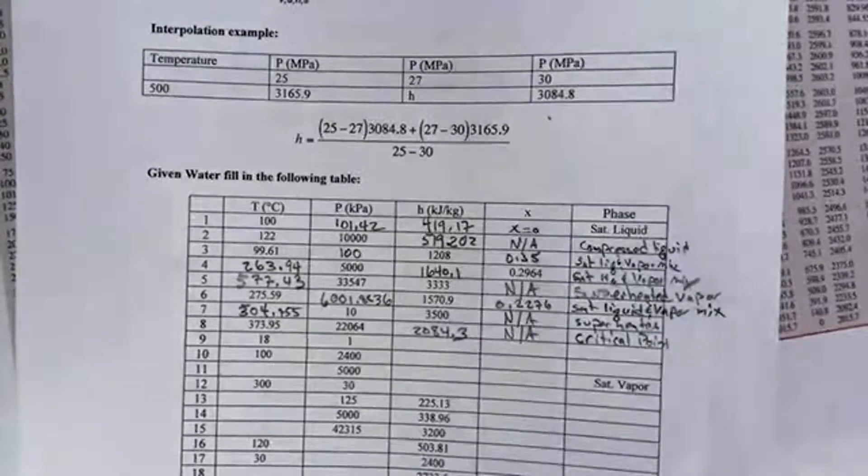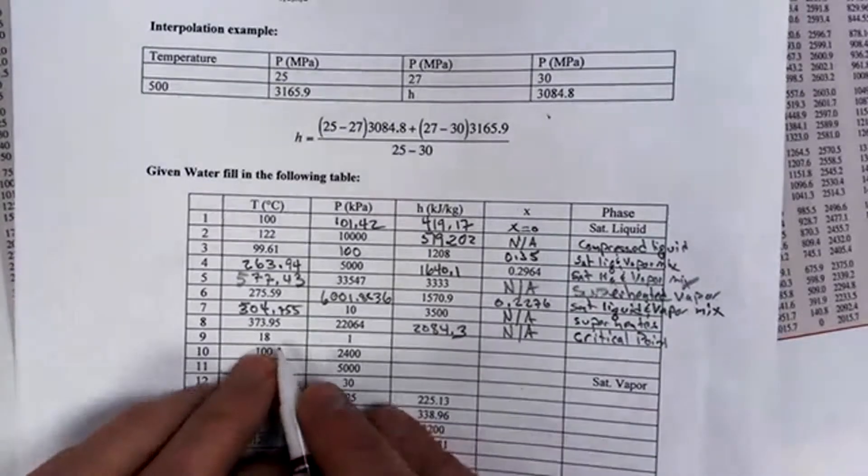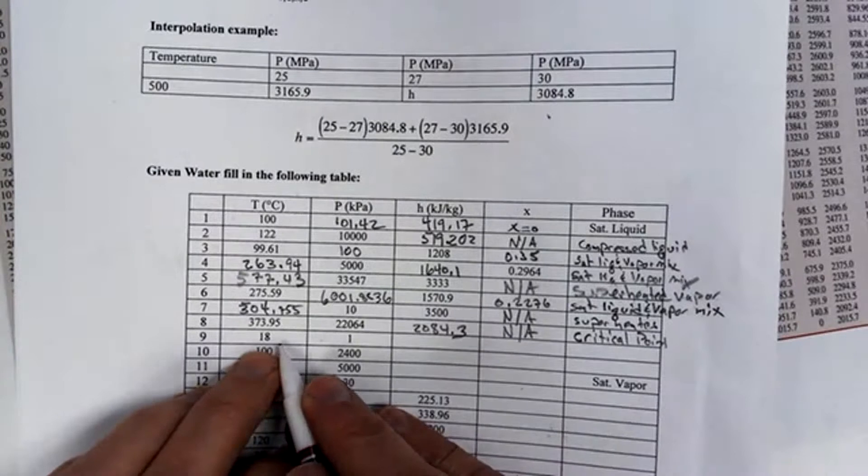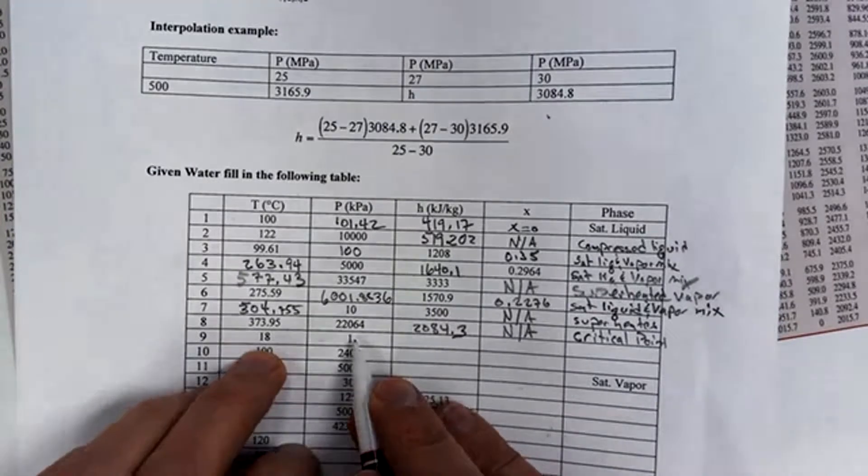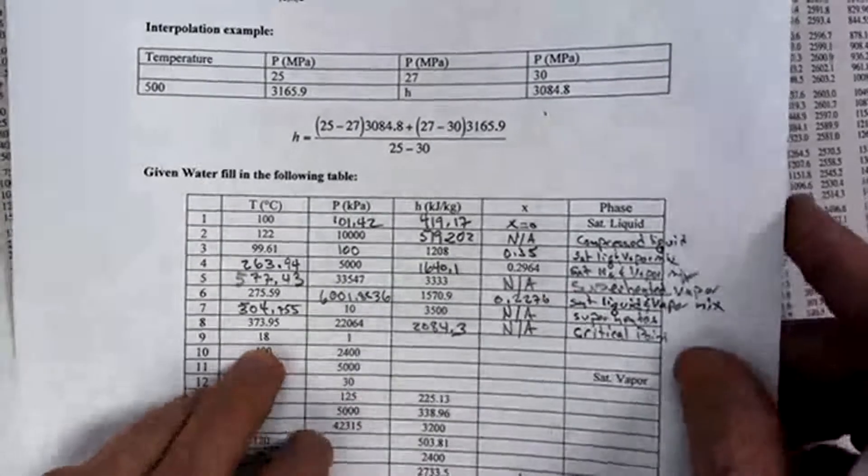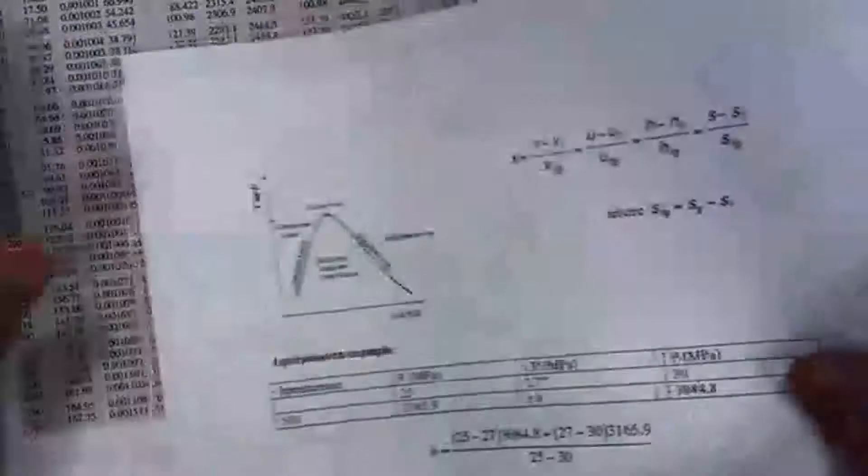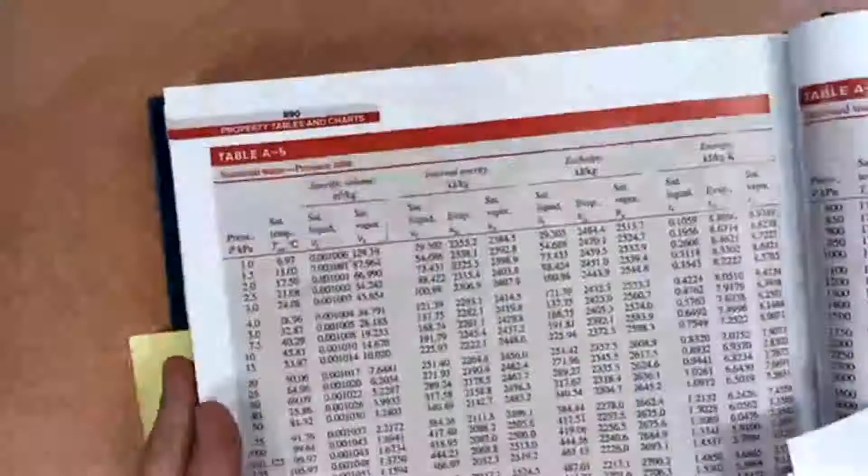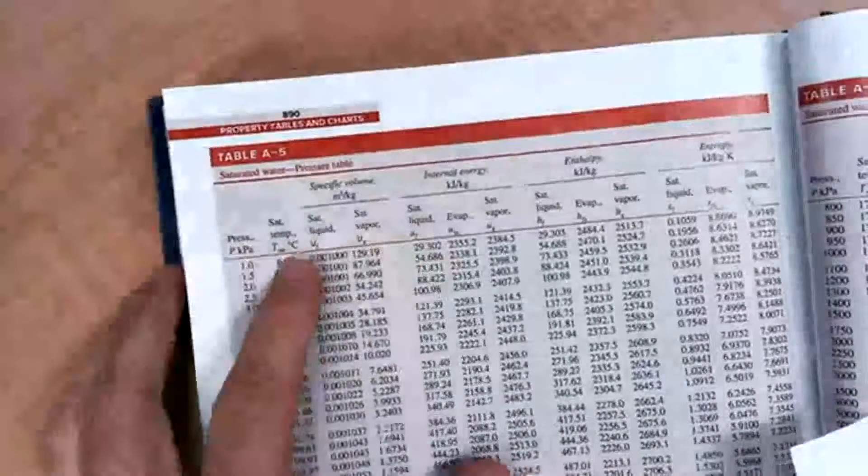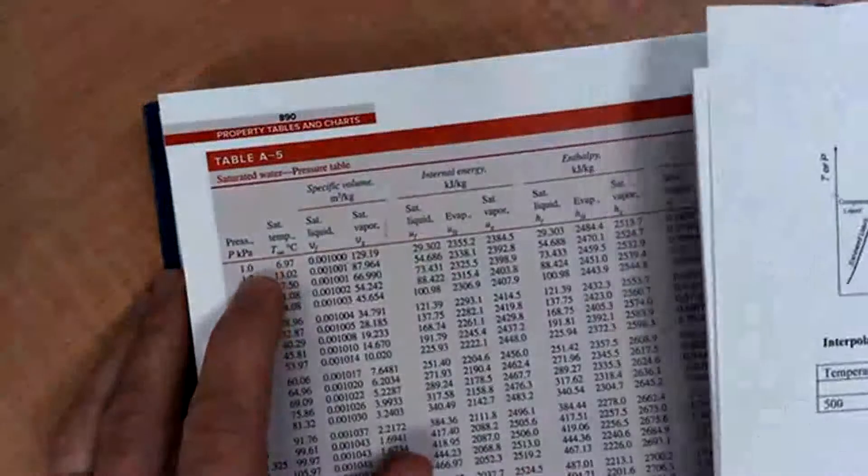All right, let's do number nine. For number nine, you're given that the temperature is 18 degrees Celsius and the pressure is one kilopascal. So I'm going to go to our steam tables here and it looks like right here, the saturation table, I'll start with this one in kilopascals.